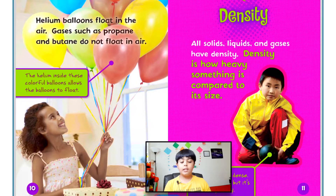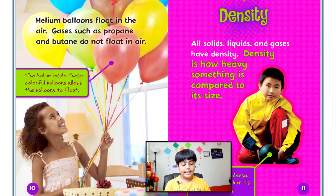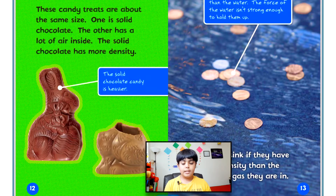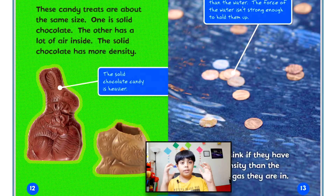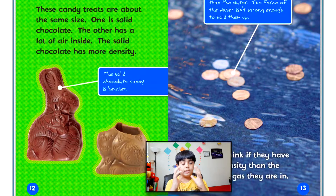All solids, liquids, and gases have density. Density is how heavy something is compared to its size. The ball is very dense — it isn't very big but it's extremely heavy. The candy treats are about the same size. One is solid chocolate, the other has a lot of air inside. The solid chocolate has more density. Something has more density basically when more of the material is compressed into what the object is.